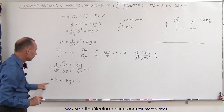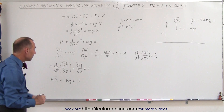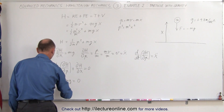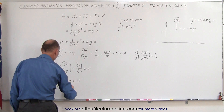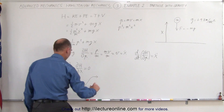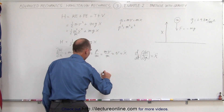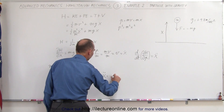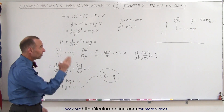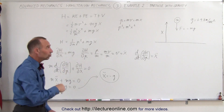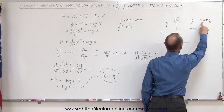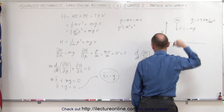We can divide both sides of the equation by m and move g to the other side, so we can say that x double dot plus g equals zero, or that x double dot is equal to minus g. That's exactly what's happening — the acceleration of that particle will be equal to minus g.